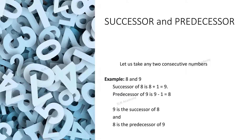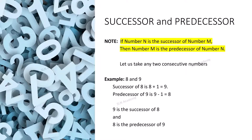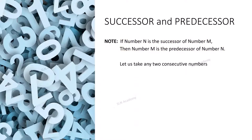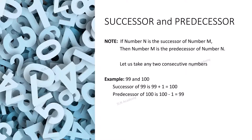So, what have you observed? If the number n is the successor of number m, then number m is the predecessor of number n. For example, with consecutive numbers 99 and 100: the successor of 99 is 99 plus 1, which is 100, and the predecessor of 100 is 100 minus 1, which is 99. So 100 is the successor of 99 and 99 is the predecessor of 100.